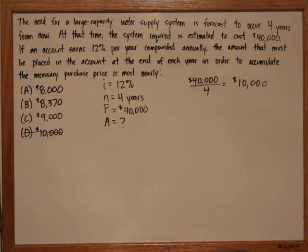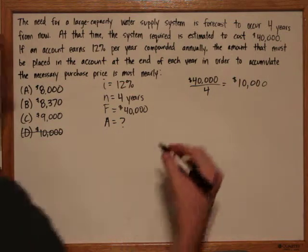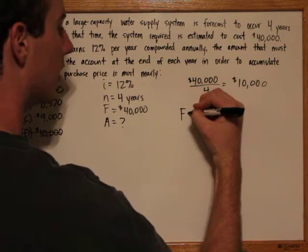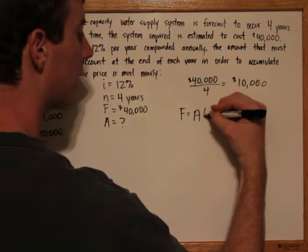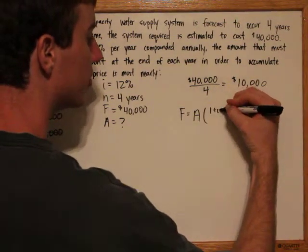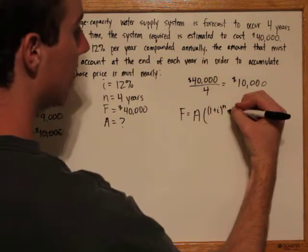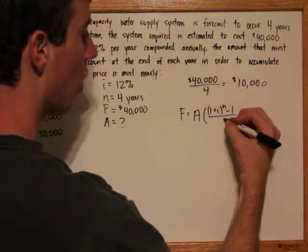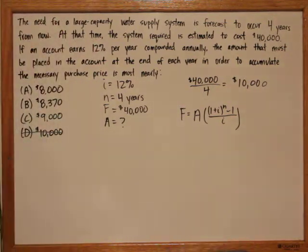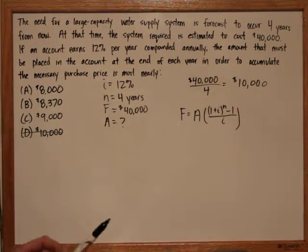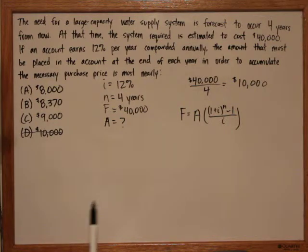In order to solve a problem like this, we need to use the formula f equals a times one plus the interest rate, all raised to the amount of time, minus one, over the interest rate. And this equation is used for problems where we have a set payment that occurs regularly, where interest is accrued on that payment.